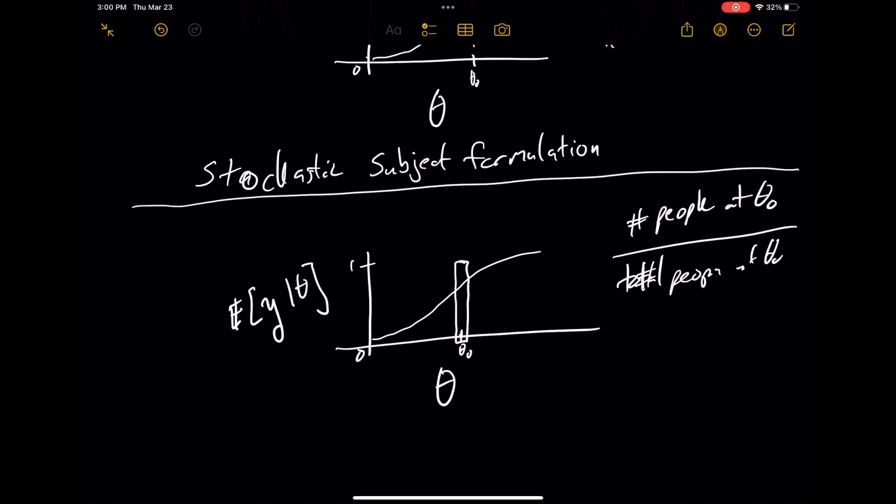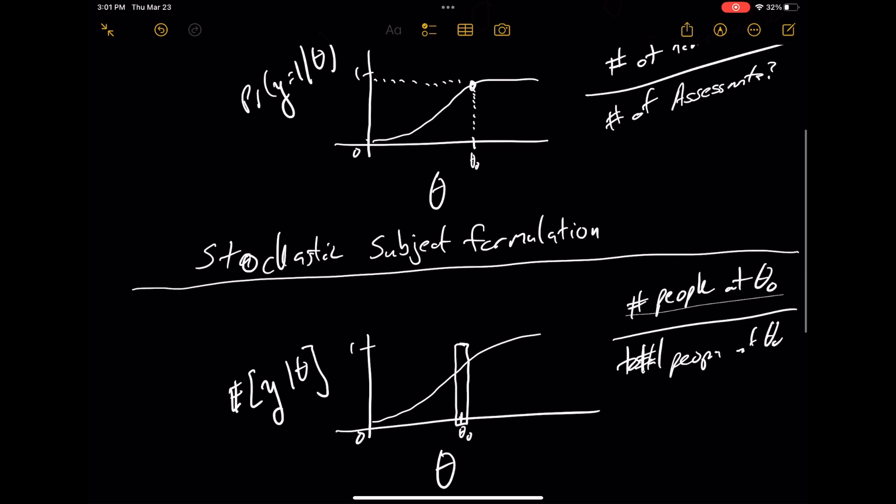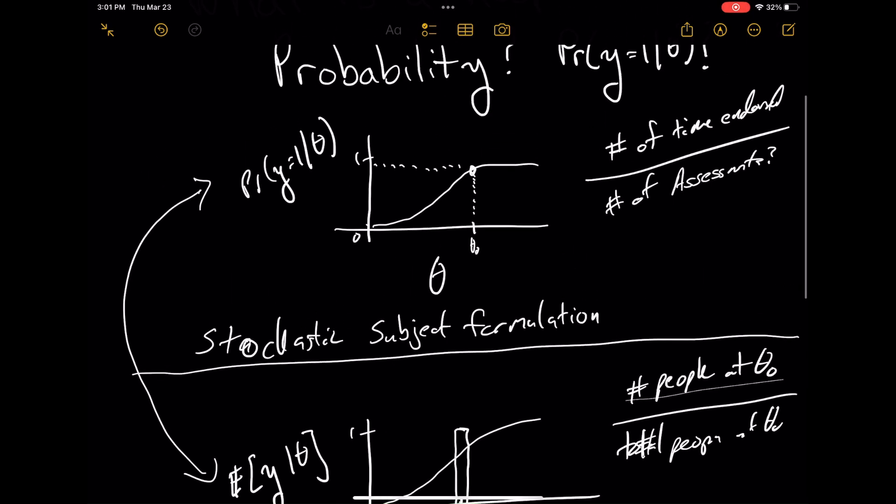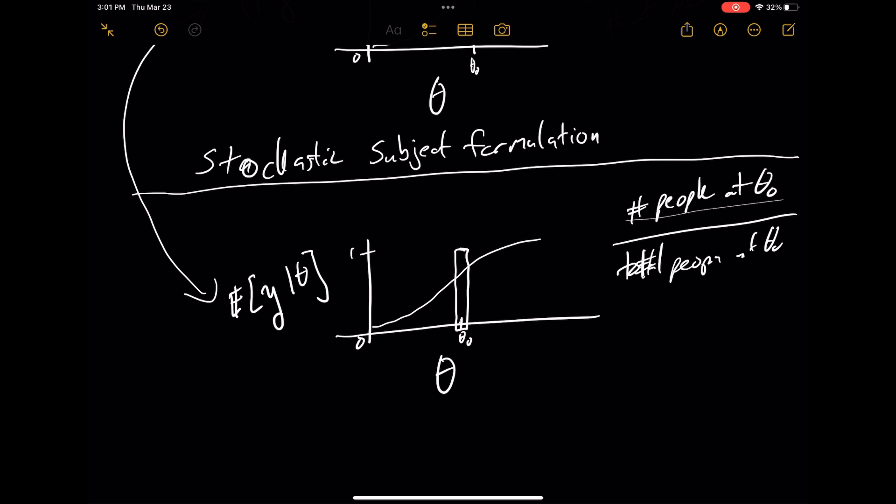This is thinking about it in terms of the population as opposed to the stochastic subject, which is the individual level. Thinking about it in terms of expectation allows us to move away from individuals and into the group or population level. Being able to go between thinking about expectations versus probabilities allows us to expand our way of thinking about item response theory to move away from just probabilities to thinking much more generically.